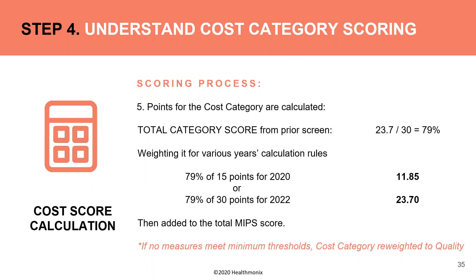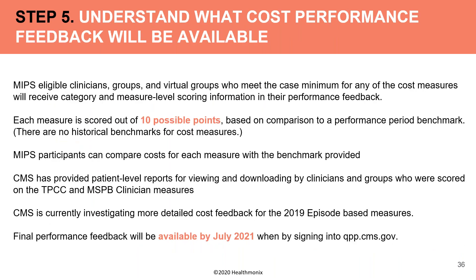You add up your scores across all applicable measures, divide by the total possible points, and apply that percentage to the 15 cost category points available in 2020. For example, a combined score of 23.7 out of 30 yields 79%, giving you 11.85 out of 15 points. In 2022, with 30 points possible, the same performance would yield 23.7 points. If no measures are attributed to you, CMS doesn't calculate a cost component and those points roll into your quality component.